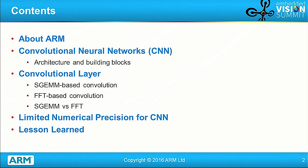So let's start to see the contents of this talk. After a brief introduction about ARM, we are going to introduce a minimal background behind convolution in neural networks, answering three main questions. The main part of this talk will show two approaches for solving the problem of convolution: one based on matrix multiplication SGEMM, and the second one based on the FFT. The third and last part will emphasize the important aspect of limited numerical precision for convolution in neural networks, in order to achieve a significant speed up.